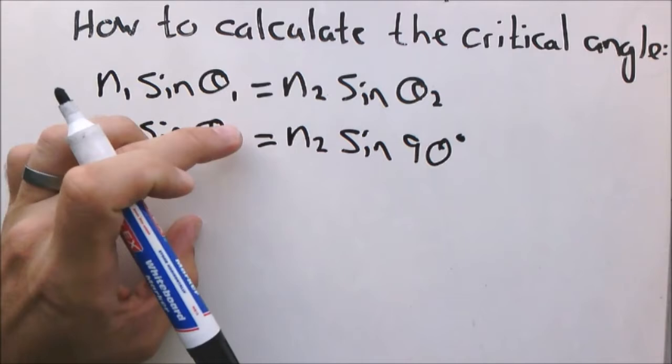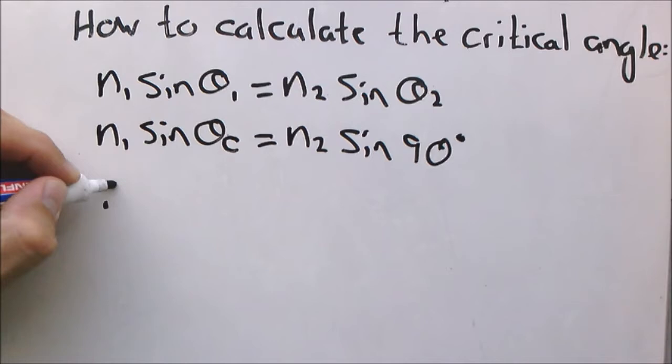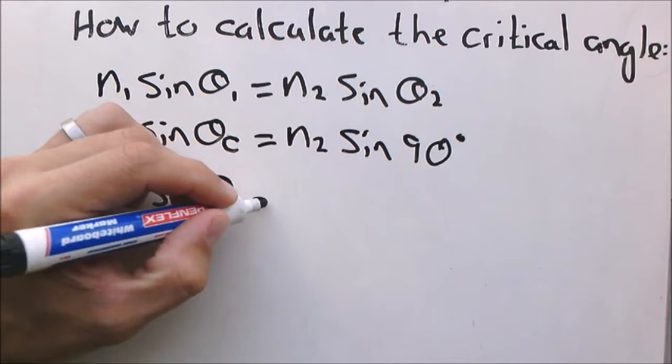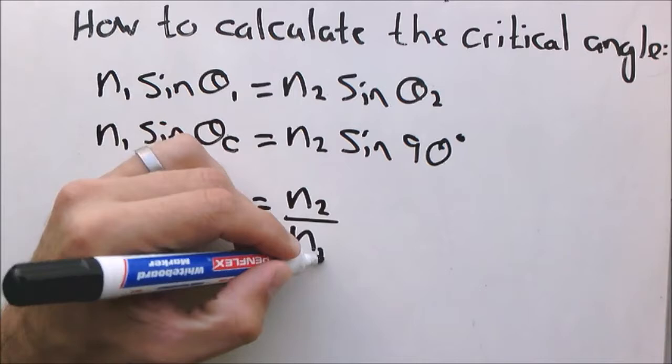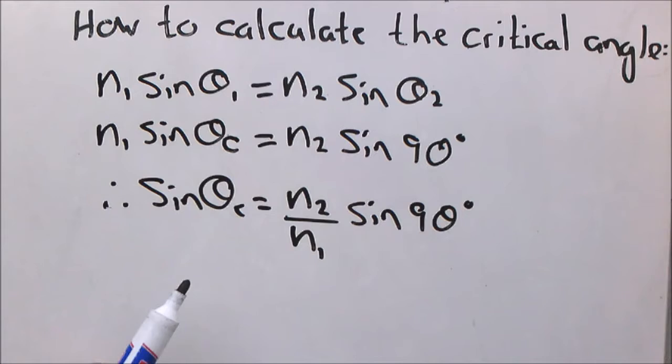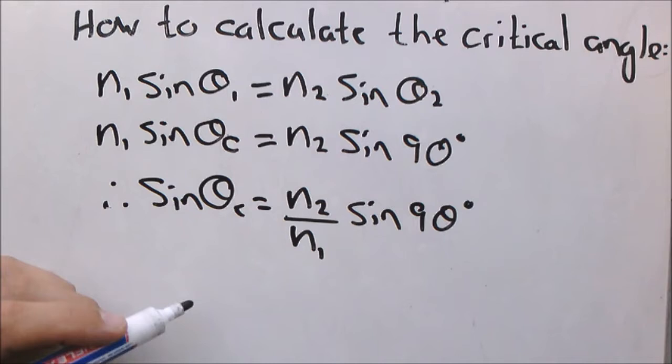Theta 1 becomes the critical angle. Applying Snell's law, we get: sine theta c equals N2 divided by N1, times sine 90. This gives us an expression for sine theta c, and from there you can calculate the critical angle theta c by using the inverse sine function on your calculator.